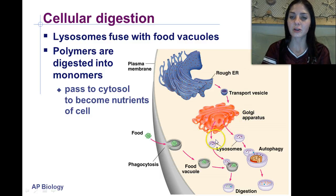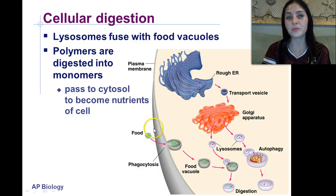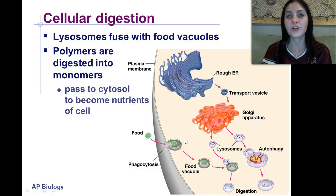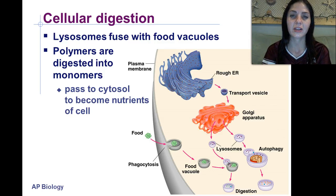These lysosomes will then fuse with a food vacuole. Food is taken into the cell through the process of phagocytosis — phago sounds like food, so phagocytosis is taking in food to the cell.